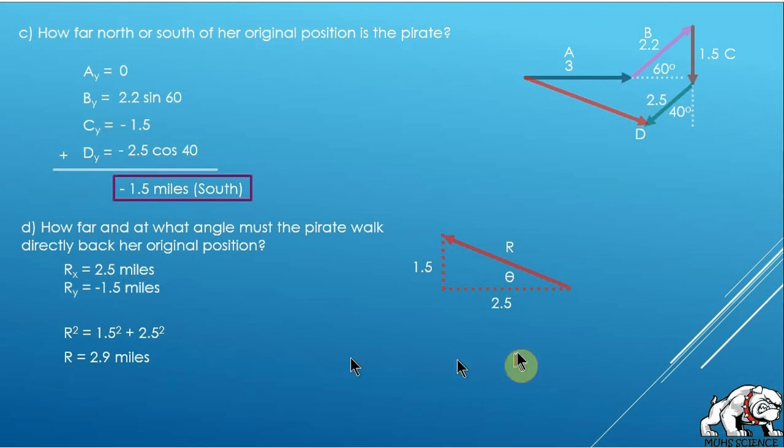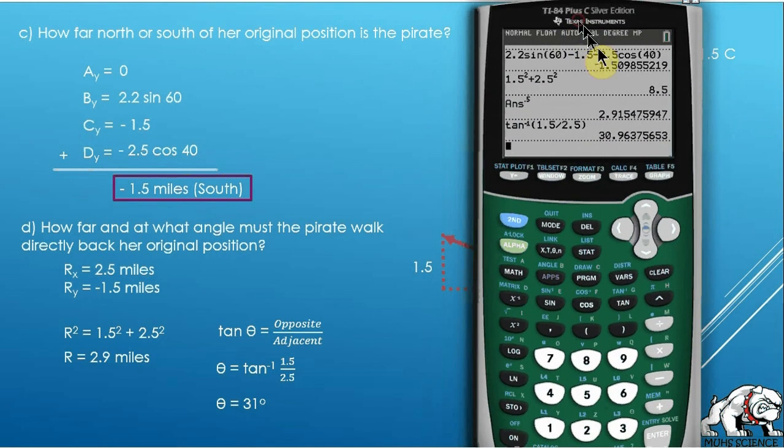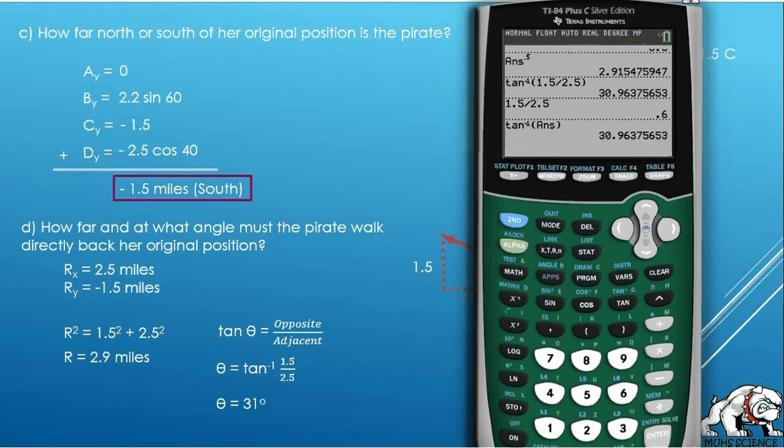If I want to solve for theta, we go back to this idea of tangent. And if I bring my calculator in here and I do 1.5 divided by 2.5, I'm going to hit enter there. And now I'm going to take the arc tangent of that bad boy and I should get 31 degrees. 30.96 etc., that's close enough to 31 degrees for us.